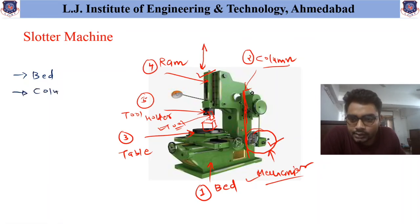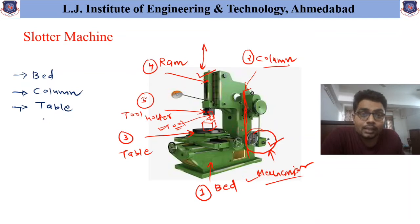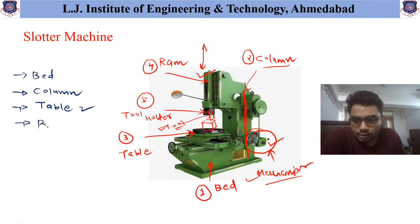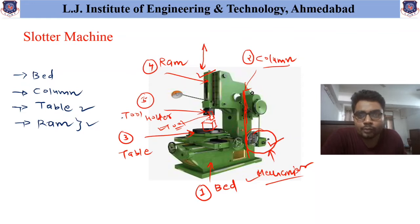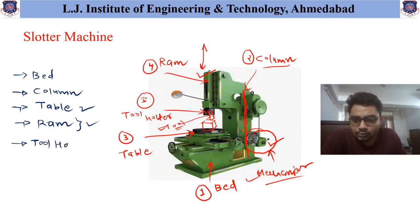The next important common part is the column, which is the vertical part. The next is the table, used to hold and support the workpiece, and also to provide axial movement — that is, movement in the x direction and y direction to the workpiece. The next common part is the ram, used to provide reciprocating movement to the tool for machining operations. The next common part is the tool holder, used to hold and support the tool.